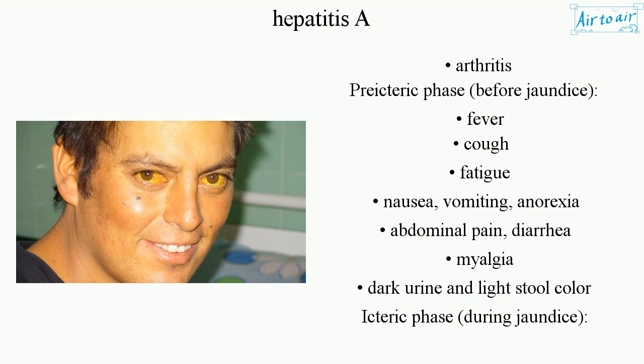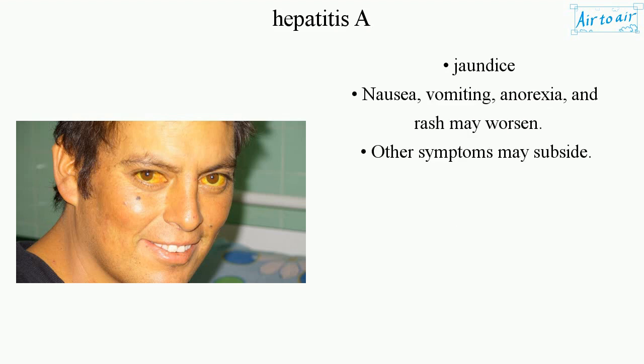The icteric phase occurs during jaundice. Symptoms including jaundice, nausea, vomiting, anorexia, and rash may worsen, while other symptoms may subside.